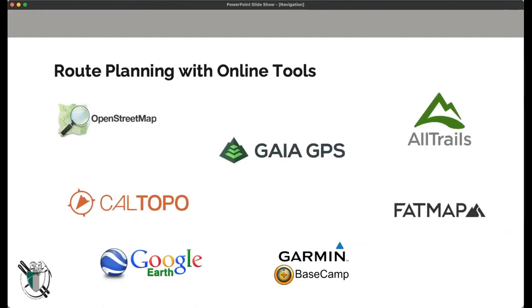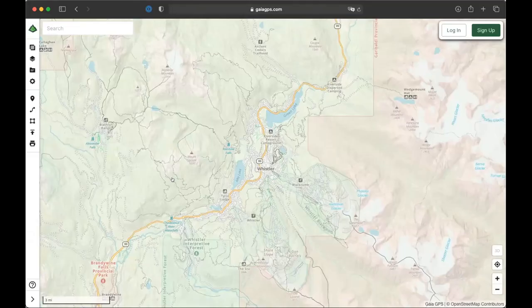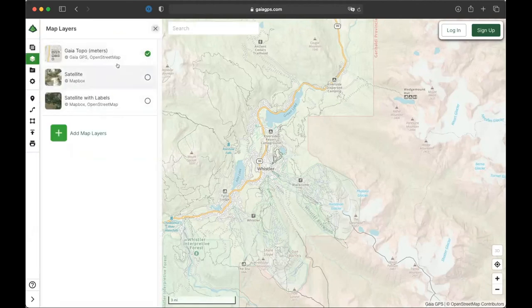There are various types of online tools available for planning. Rather than going through what each tool does, here are a few things you want to look for in one of these tools. I'm going to switch my screen and show an example with Gaia, which you can use for free on a web browser or on your phone. Key things to look for include the ability to have different types of layers — for instance, the regular topo gives you contour lines and terrain features, and you can turn on a satellite layer to see what the terrain actually looks like.